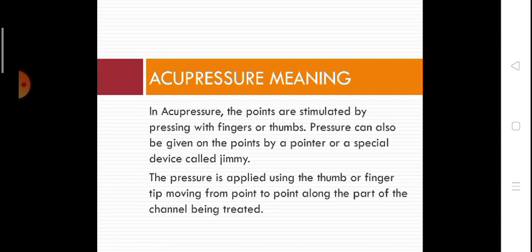In acupressure, the points are stimulated by pressing with fingers or thumb. Pressure can also be applied using a pointer or a specific device called a jimmy. The pressure is applied using the thumb or fingertip, moving from point to point along the part of the channel.